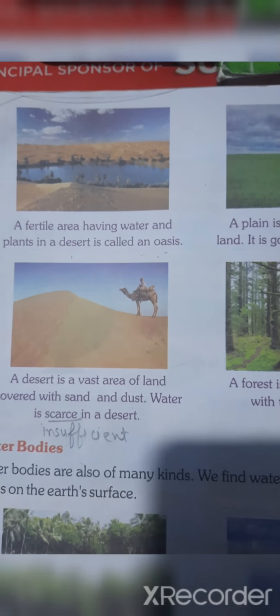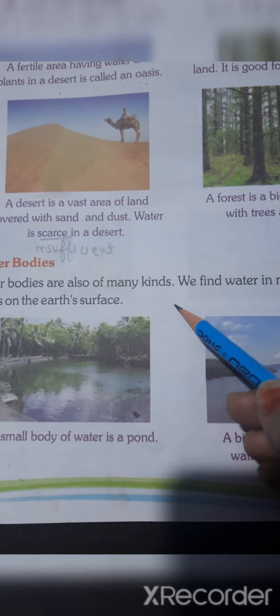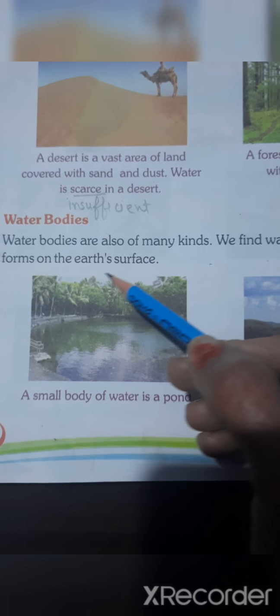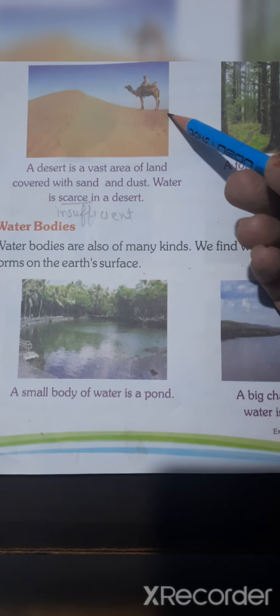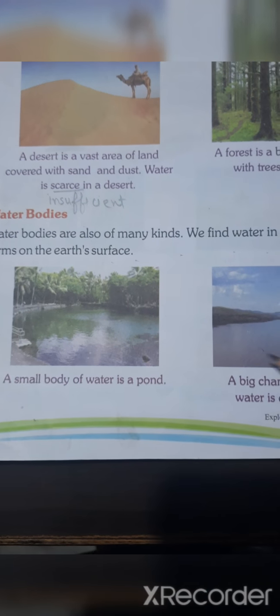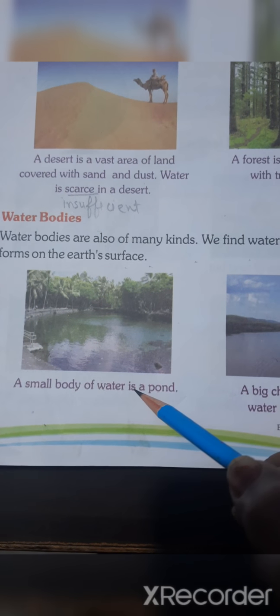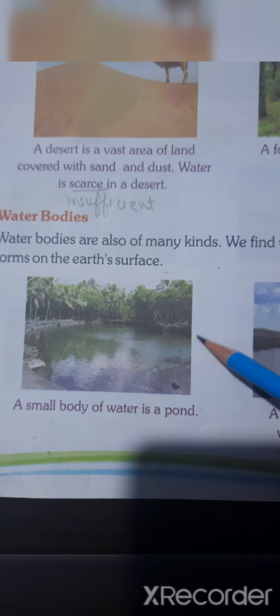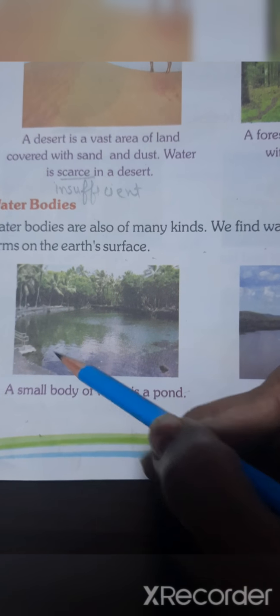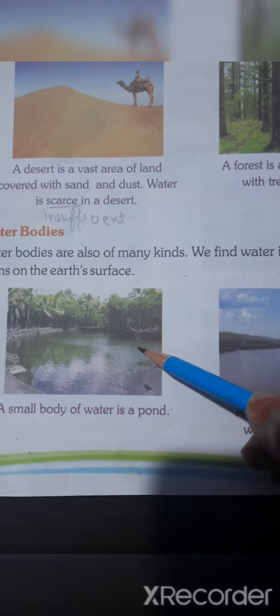Now, water bodies. These are of land parts, and these are water bodies. Water bodies are also of many kinds. We find water in many shapes and forms on the earth's surface. A small body of water is a pond. When you see at the side of a road or place, this kind of water pond where some water is collected in a village or rural area — it is a small body of water, it is a pond.